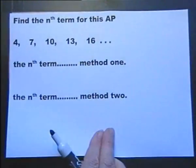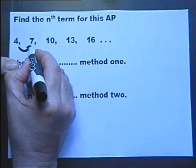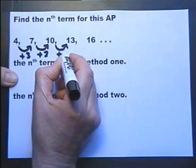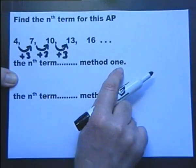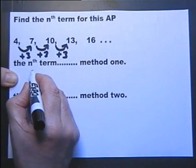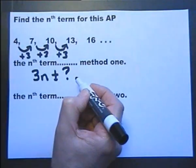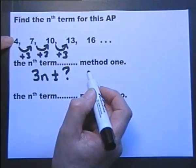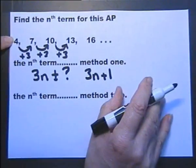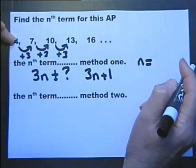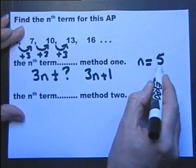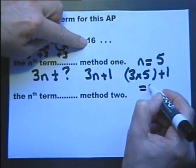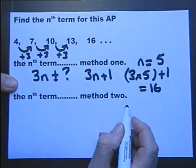Let's look at this arithmetic progression where we're adding three each time, so the common difference d is plus three. To find the nth term, one method is to appreciate that if you add three each time, the nth term is going to be 3n plus or minus a value. To find that value, subtract the common difference from the first term: three from four gives you one, so the nth term is 3n plus one. Checking with n equals five: three fives plus one gives sixteen, which works.